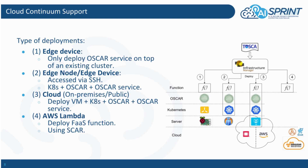And there is a final case — that is AWS Lambda — where only the fast functions are deployed on top of this infrastructure. In this case, the SCAR tool is used to facilitate the connection.